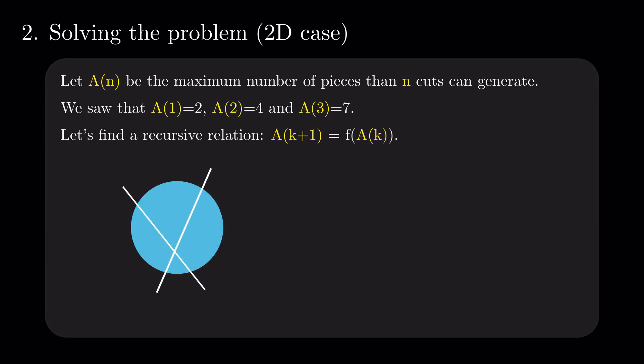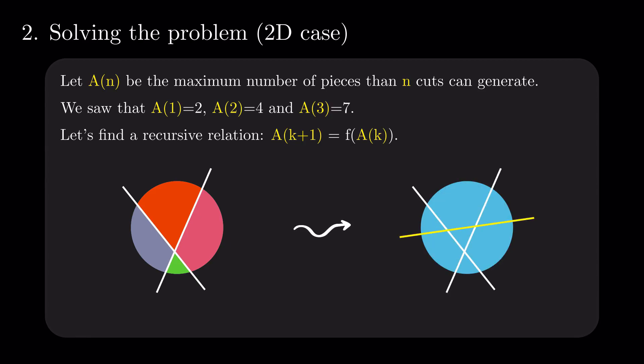To do this, let's consider the changes in the state of the circle when we add the k plus 1 line. To maximize the areas created, the k plus 1 line will have to not pass through any existing intersection point and intersect with all the previous lines inside the given circle.